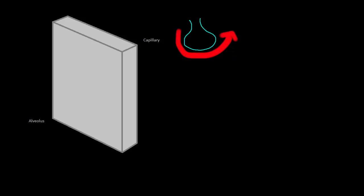What's going to happen is carbon dioxide is going to leave the blood, enter the alveolus to be exhaled off, and oxygen is going to enter the blood from the alveolus so that we can reoxygenate the tissues of our body.